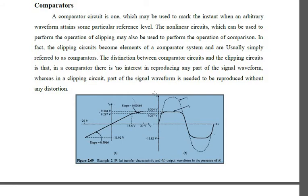In a comparator, you compare two signals and select the better one — for example, the one with less distortion. When comparing two circuit input waveforms above or below a reference level, you clip off the unwanted portion. So the clipping circuit becomes the element of a comparator and can be referred to as a comparator.